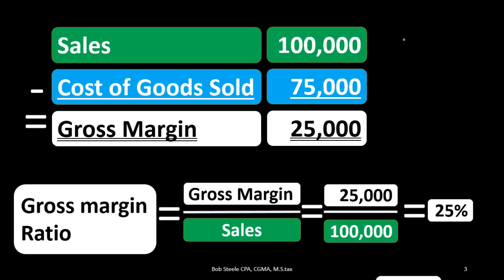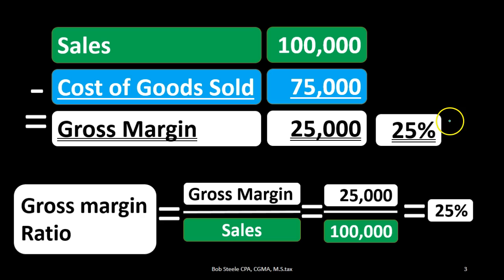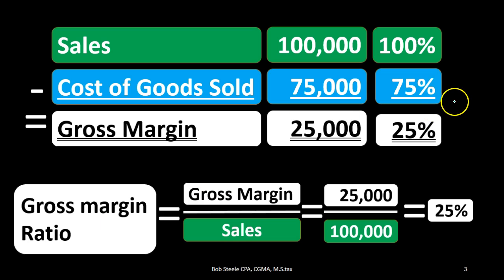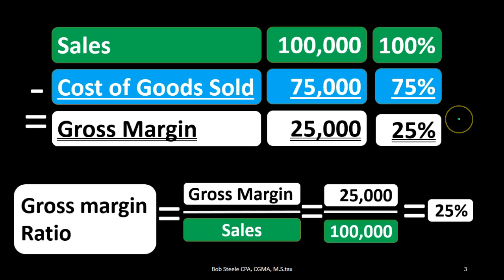We can represent this as the 25% gross margin ratio. Comparing that: sales over sales is 100%, cost of goods sold of 75,000 over sales of 100,000 is 75%. So for every dollar of sales, the inventory cost is 75 cents, leaving us with 100 minus 75, or 25%. That's another way to look at the gross margin ratio.